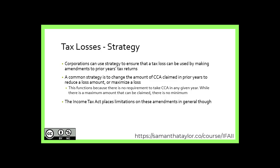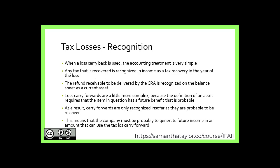Rather, we're looking at how to recognize these tax losses and when to use them in general. The tax loss recognition is quite simple — although please note, simple does not mean easy. Any tax is recognized in income as a tax recovery in the year of the tax loss. This refund receivable is to be delivered by the CRA and is recognized on the balance sheet as a current asset. Tax loss carry forwards are a bit more complex because the definition of an asset requires that this item needs to have future economic benefit, and that benefit needs to be probable. Therefore, carry forwards are only recognized insofar as they are probable to be received, meaning the company must be able to generate future income sufficient to actually utilize that tax loss carry forward.